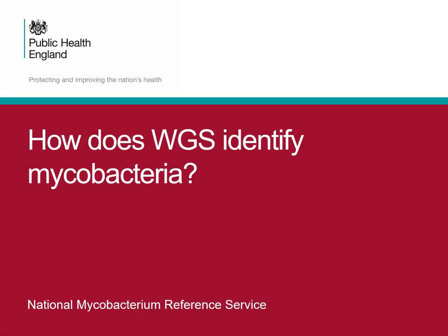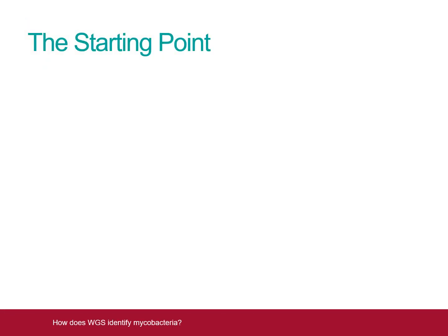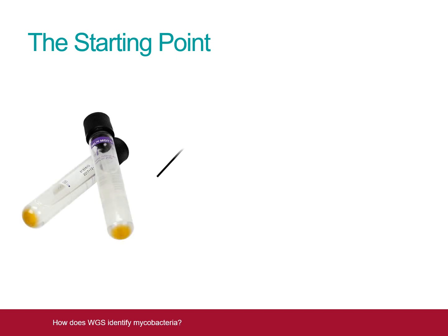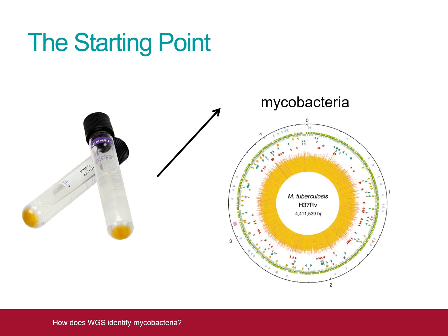In this video we will cover how the whole genome sequencing system used by the NMRS identifies mycobacteria. The starting point for whole genome sequencing is a positive culture containing mycobacteria and thus mycobacterial DNA. A positive culture containing mycobacterium tuberculosis contains enormous numbers of copies of the entire TB genome, a circular string of DNA nearly 4.5 million bases long.